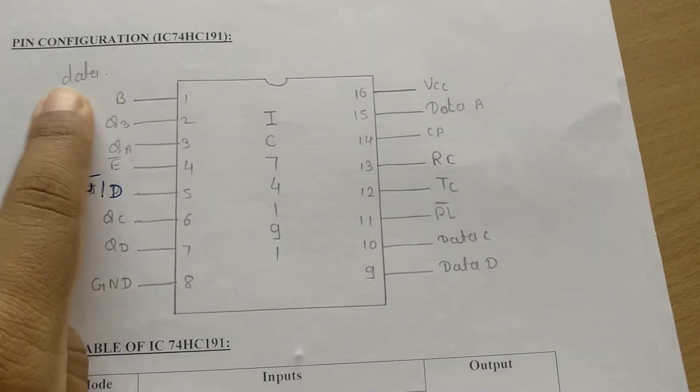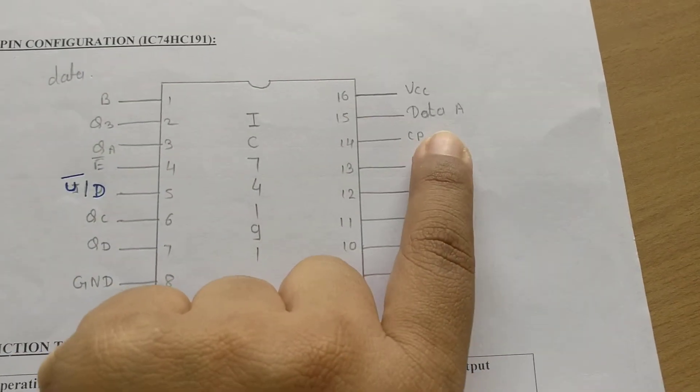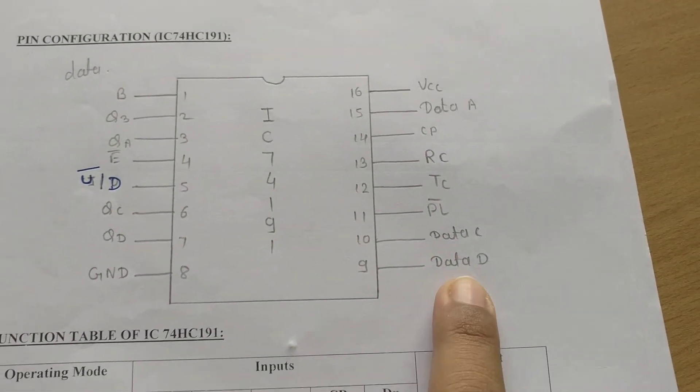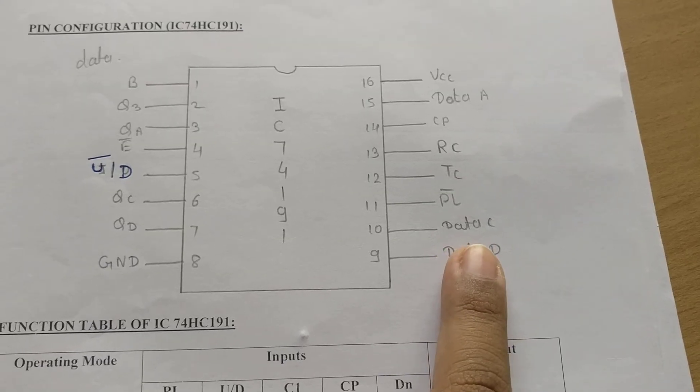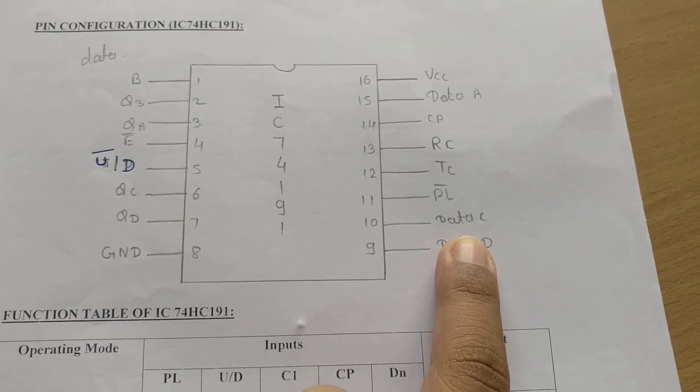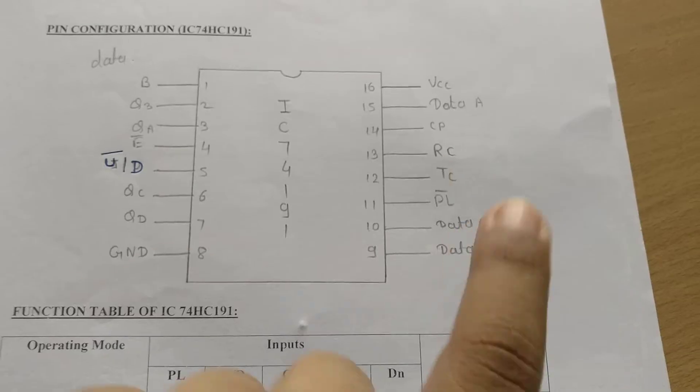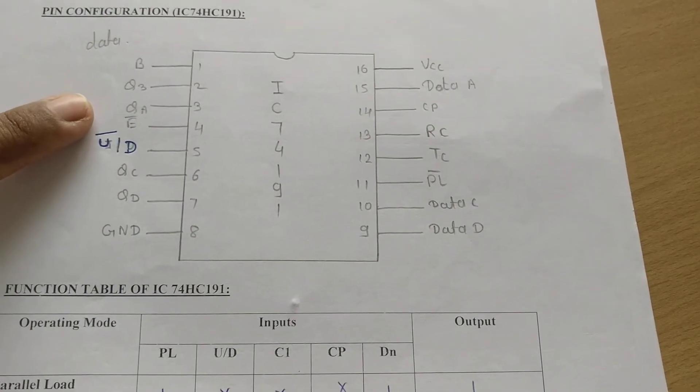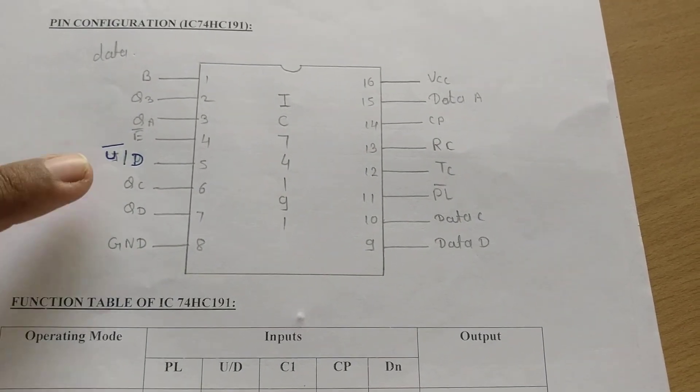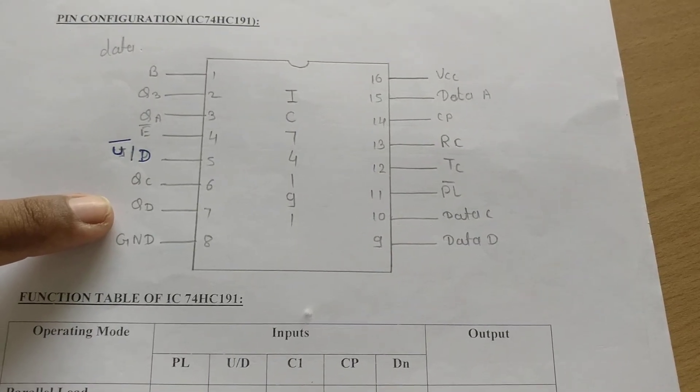Pin number 1 is data B, pin number 15 is data A, pin number 9 is data D, and pin number 10 is data C. These are your 4-bit input data. Then pin number 3 is QA, pin number 2 is QB, pin number 6 is QC, and pin number 7 is QD.